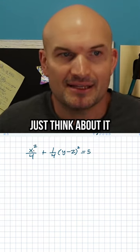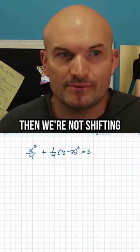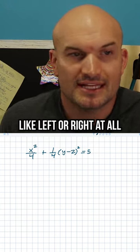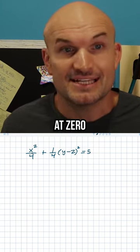So again, just think about it. If x is not being transformed anyway, then we're not shifting the circle or the center of the circle, like left or right at all. So that's going to stay at zero.